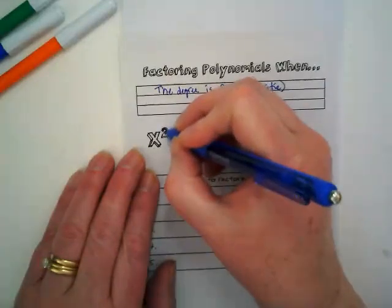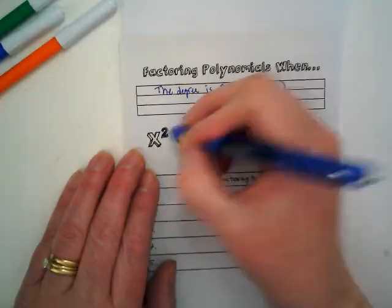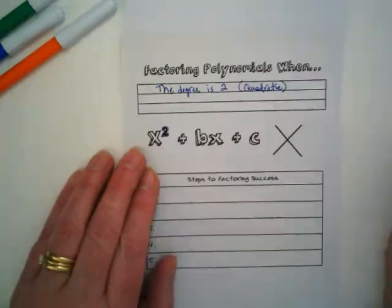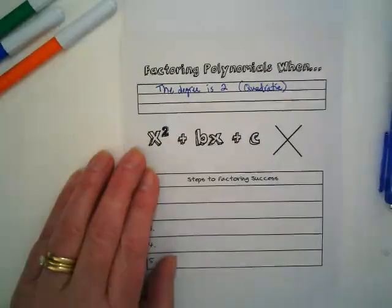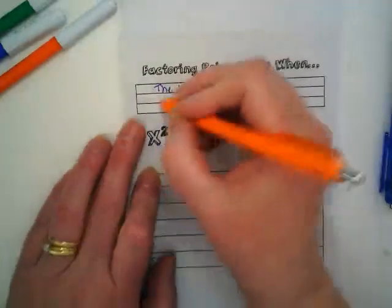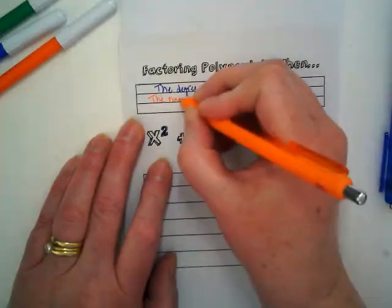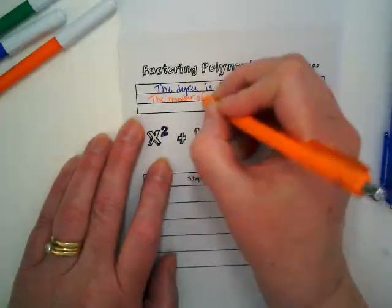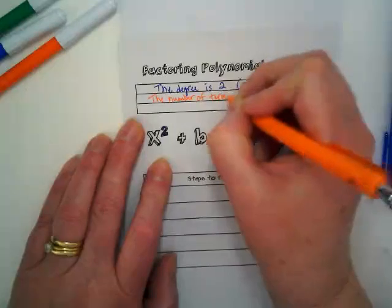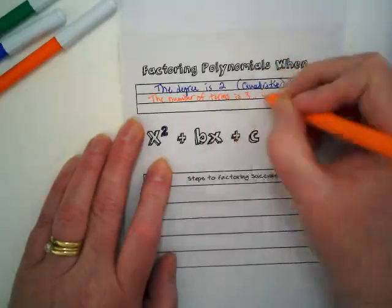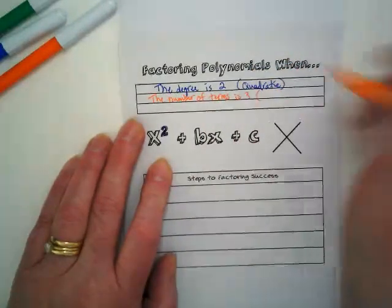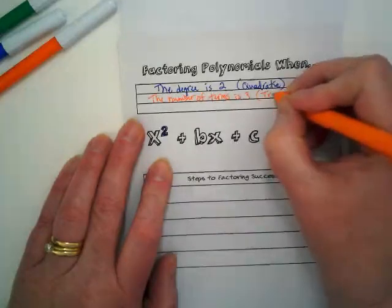Next up, the number of terms is three. And what do we call a polynomial with three terms? A trinomial.